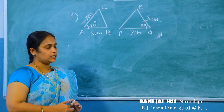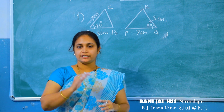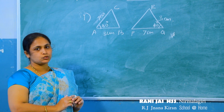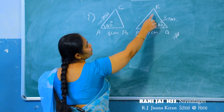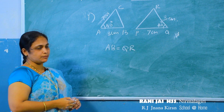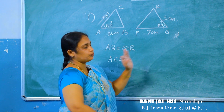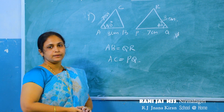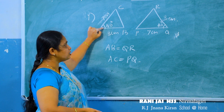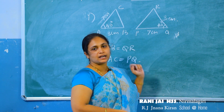Now, in these two triangles, find the matching pairs of angles. To find matching pairs, we first write the equal sides. AB equals QR — both are 3 centimeter. And AC equals PQ — both are 7 centimeter. So these two sides and the angle between them in triangle ABC are equal to the corresponding two sides and angle in triangle PQR. Therefore, these two triangles are equal.